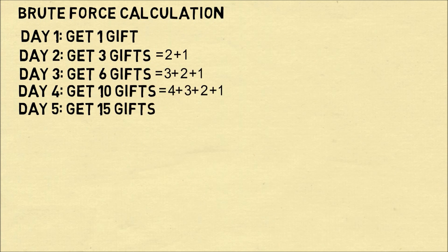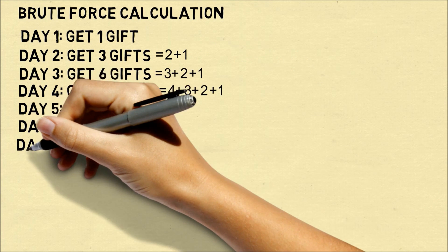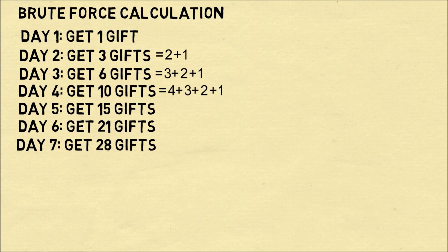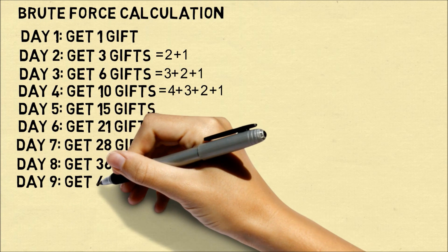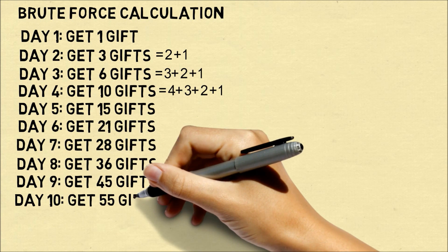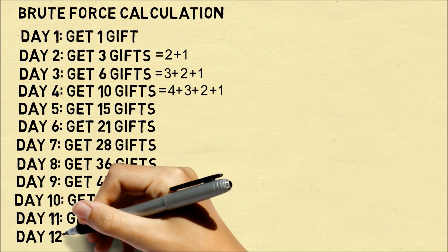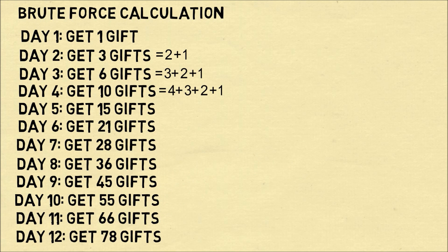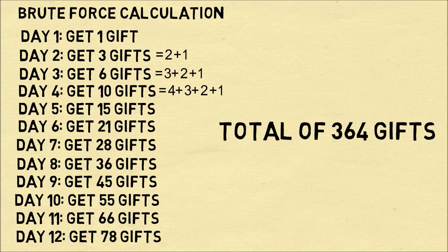Every day you add that number of gifts. So on day six we get twenty-one. Day seven we add seven to get twenty-eight. Then we add eight to get thirty-six. We add nine to get forty-five. We add ten to get fifty-five. We add eleven to get sixty-six. And finally we add twelve to get seventy-eight gifts. So the total number of gifts given on all twelve days — we add up these twelve numbers and we get three hundred and sixty-four gifts.